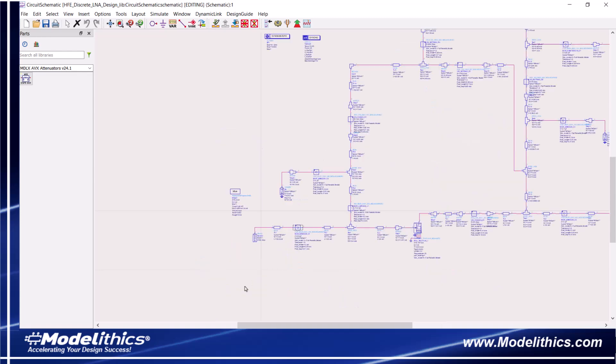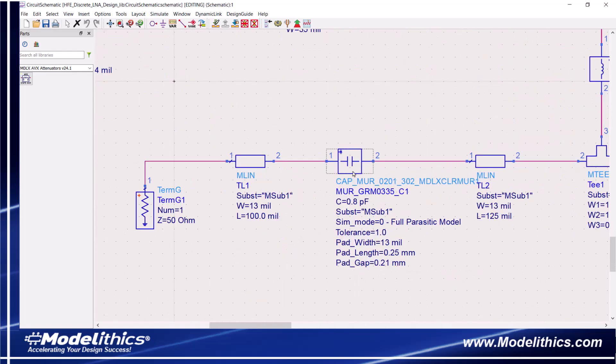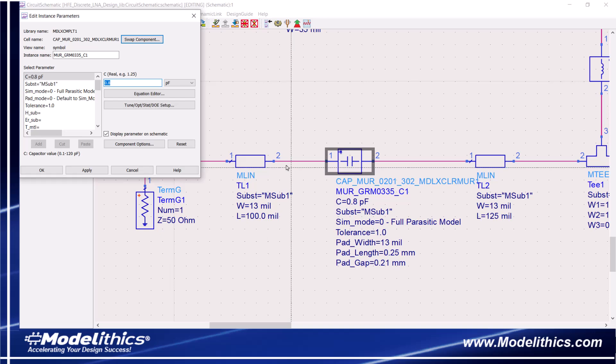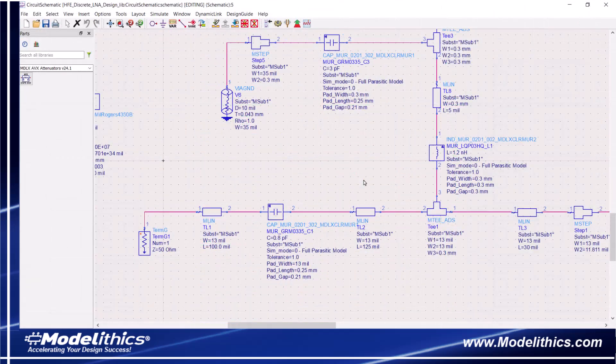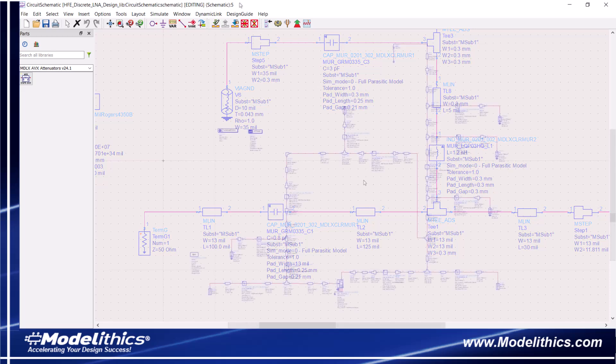For example, let's look at the series capacitor at the input. This is a microwave global model for the Murata GRM0335 capacitor series. This model covers a capacitance range of 0.1 to 120 pF. In this case, the values of this series capacitor and the parallel inductor in the input matching network were tuned to allow for optimal noise figure.